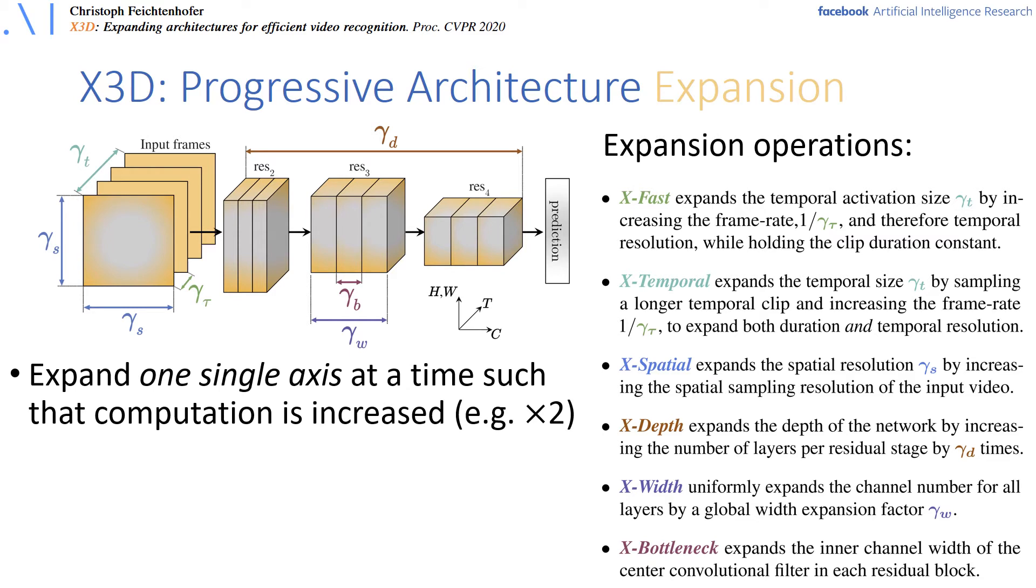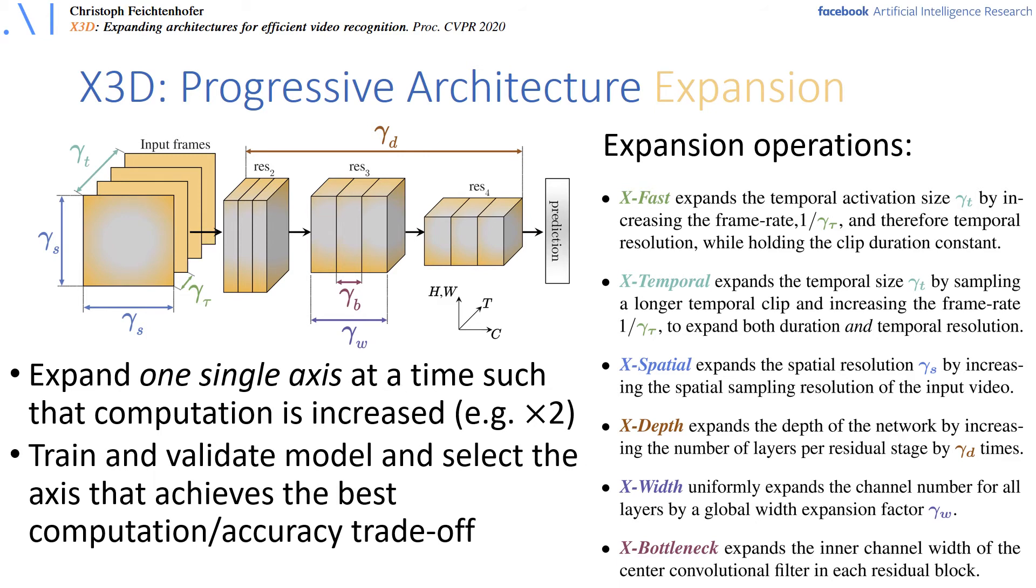Our expansion progressively increases the computation, for example by 2x in each step, by only expanding one axis at a time. Train and validate the resultant model and select the axis that achieves the best computation accuracy trade-off. The process is repeated until the architecture reaches a desired computational budget.